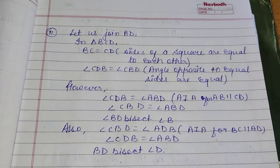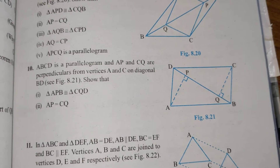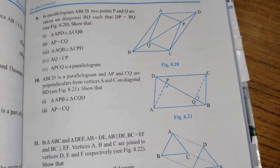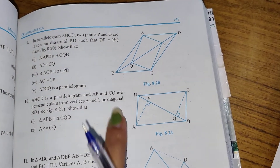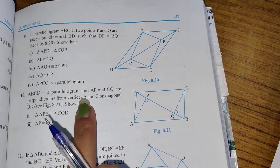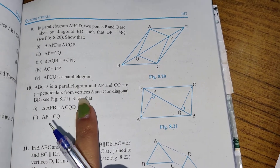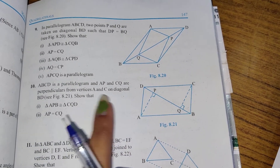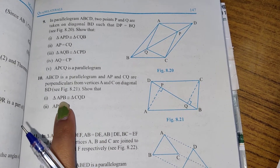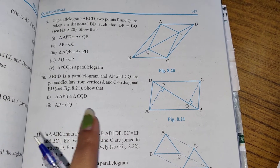Now question number 10. ABCD is a parallelogram and AB and CQ are the perpendiculars from vertices A and C on diagonal BD. We have to show that triangle ABB is congruent to triangle CQD, and that AB is equal to CQ.